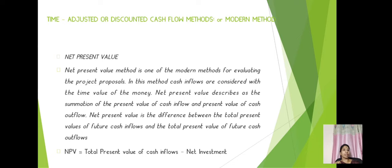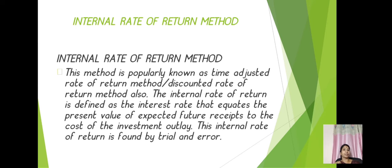NPV = Total Present Value of Cash Inflows minus Net Investment. Next, under the modern method, we have the internal rate of return method, properly known as the time adjusted rate of return method or discounted rate of return method. The internal rate of return is defined as the interest rate that equates the present value of expected future receipts to the cost of the investment outlay. This internal rate of return is found by trial and error.